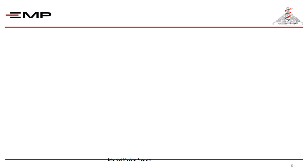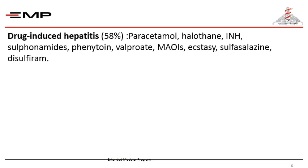Causes of acute liver failure are variable. Drug-induced hepatitis constitutes more than half of cases, including paracetamol, halothane, isoniazid, sulfonamides, phenytoin, valproate, MAO inhibitors, ecstasy, sulfasalazine, and disulfiram.